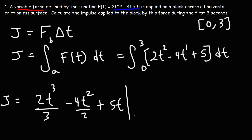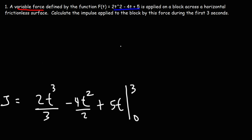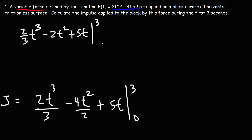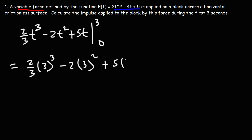Now we evaluate from 0 to 3. First, let's simplify the expression: the antiderivative becomes (2/3)t³ — since 4 over 2 is 2 — minus 2t², plus 5t. Now plugging in 3: (2/3)(3³) - 2(3²) + 5(3).